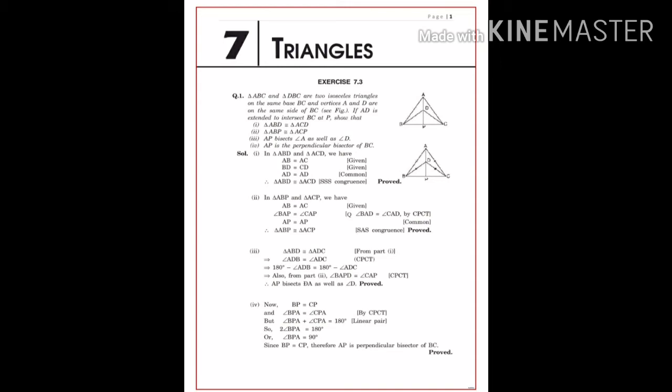Now, fourth: BP equals CP, and Angle BPA equals Angle CPA by CPCT property, as we already proved those triangles congruent. Angle BPA and Angle CPA together add up to 180 degrees because they form a linear pair, as you can see in the diagram. Since both angles are equal, we get 2×Angle BPA = 180, so Angle BPA equals 90 degrees. Since BP equals CP and Angle BPA equals 90°, therefore AP is the perpendicular bisector of BC. First question is solved.